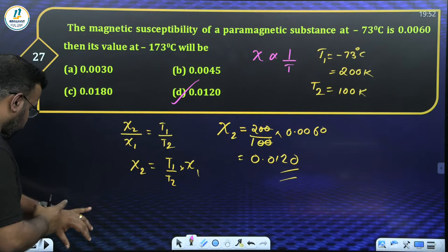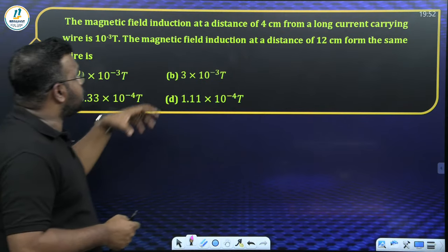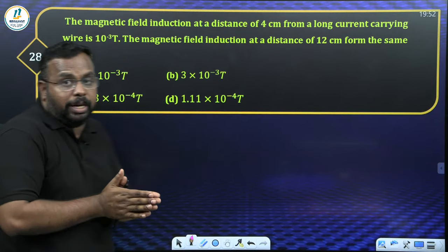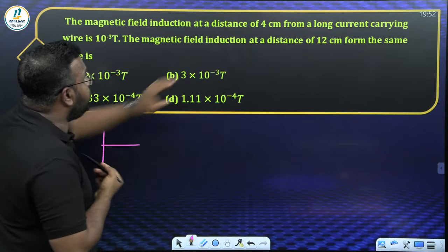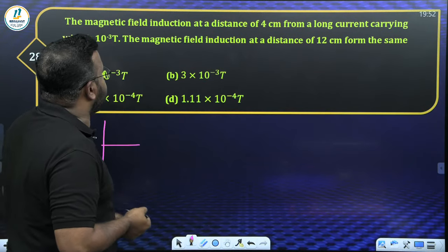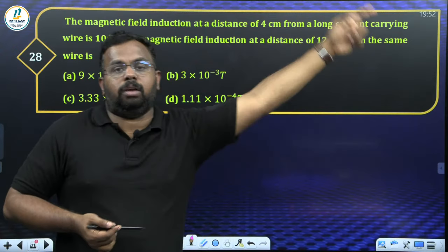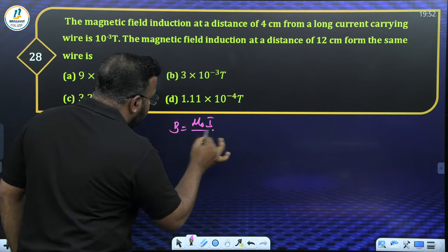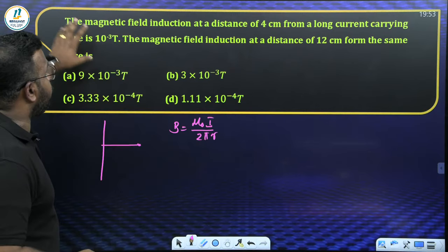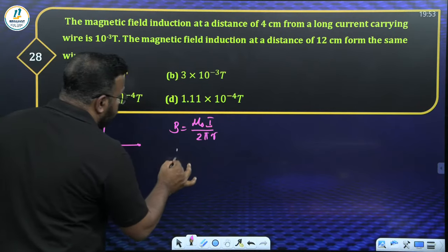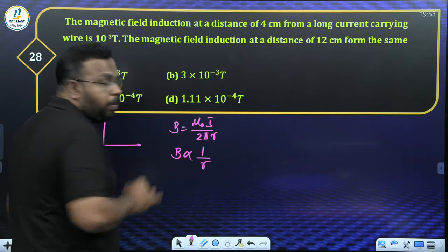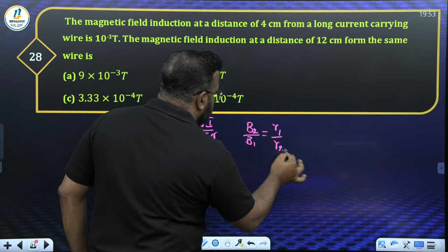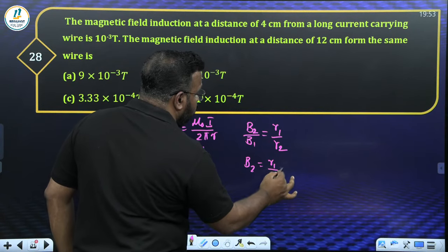Question 28: Magnetic field induction at 4 cm from a long current-carrying wire is 10⁻³ T. What is the field at 12 cm? Formula: B = μ₀i/(2πr), so B ∝ 1/r. Therefore B₂/B₁ = r₁/r₂ = 4/12 = 1/3. B₂ = (1/3) × 10⁻³ T.